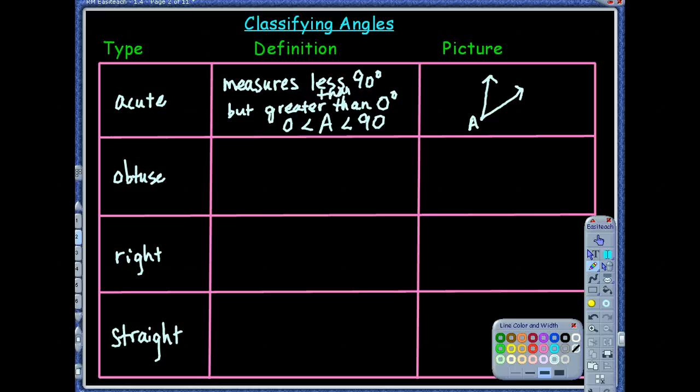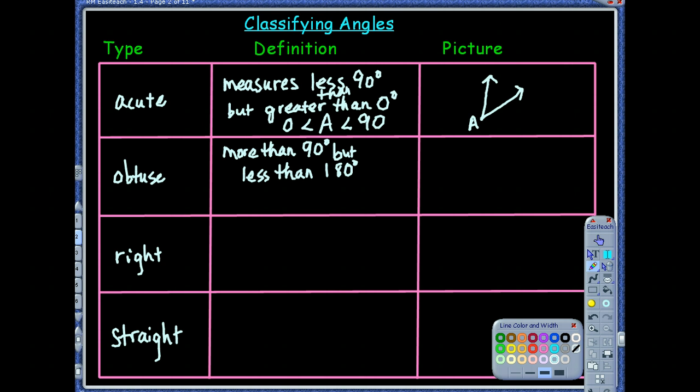Obtuse definition. Now this one, we know that it has to be more than 90 degrees. More than 90, but it also has to be less than 180. So we want to make sure that our angle is not going to be larger than a straight line. It's going to be somewhere between the 90 degrees and the straight line.